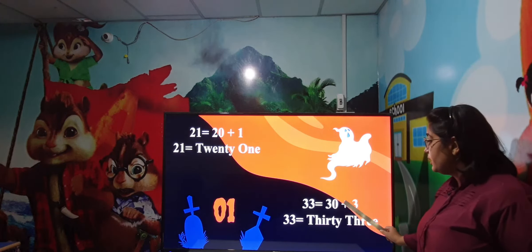Ab hume seekhni hai spelling thousands ki. Hamara number kya hai? Yahan pe pehle dekhenge: ones, tens, hundred, aur uske baad thousand. To one kya hai? Thousand ki jagah pe hai, isliye hamne likh diya one thousand. Four ka hai hundreds ki jagah pe, isliye four hundred. Yeh three ka hai tens ki jagah pe, isliye thirty. Aur two hai ones ki jagah pe, isliye two. To hamari spelling kya ban gayi? ONE THOUSAND FOUR HUNDRED THIRTY TWO.